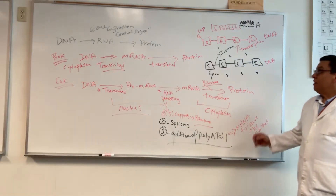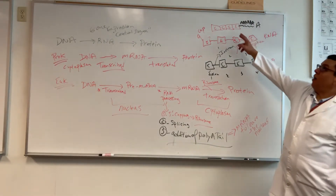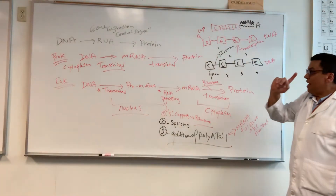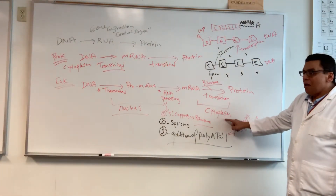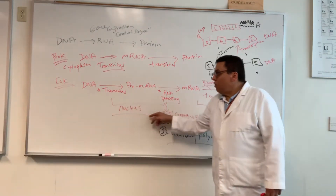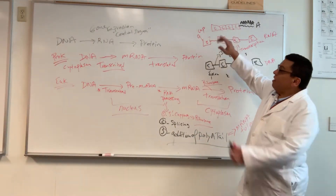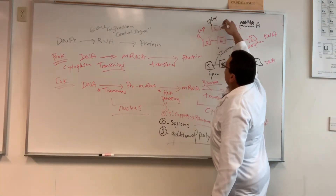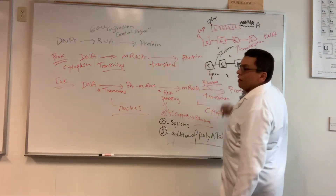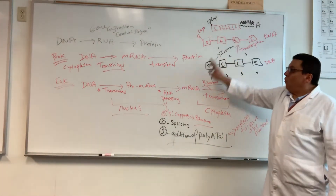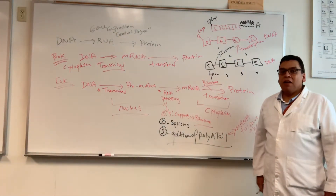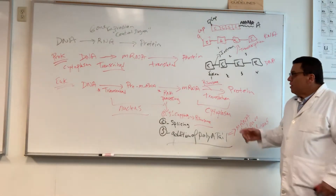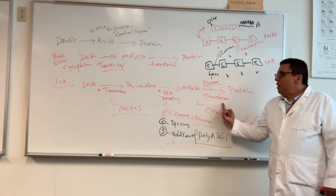The poly-A tail signals that this mRNA is ready to leave the nucleus, because translation happens in the cytoplasm. All of transcription and RNA processing happens in the nucleus. Once the mRNA is capped, spliced, and has the poly-A tail, it's fully processed, ready to leave the nucleus, attach to the ribosome, and get translated.